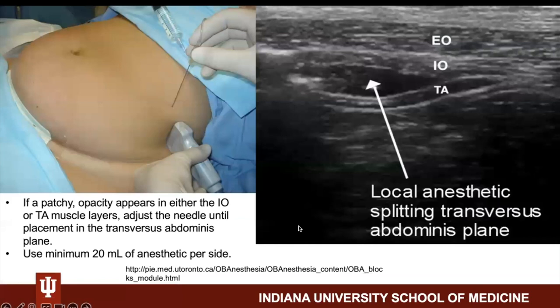Position the needle anterior to the probe and pierce the skin perpendicularly as seen in this photo. Take care to ensure the needle is in view at all times to reduce risk of structural injury. Once the needle appears to be in the layer between the internal oblique and transversus muscle, inject saline to confirm correct placement. The plane should open up, and a well-defined hypoechoic shape between the muscles will become visible as seen in this picture.